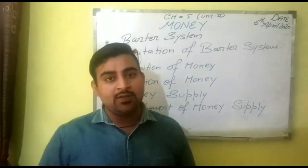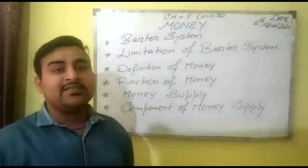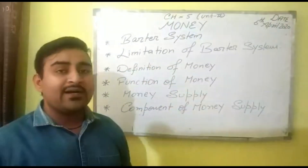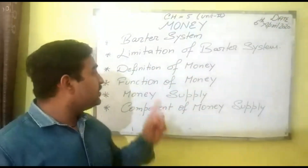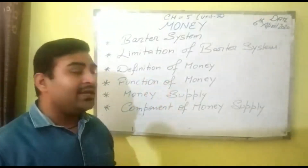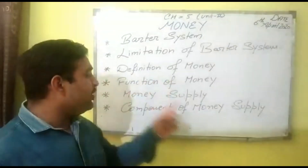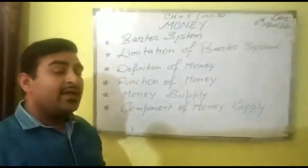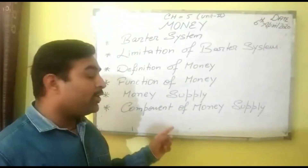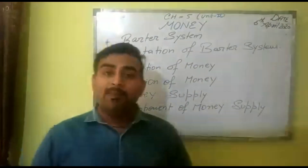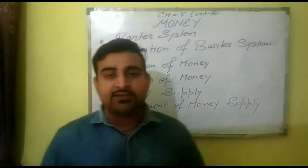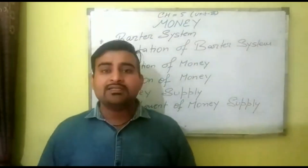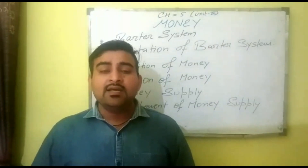In this chapter we will study: first, barter system; second, limitations of barter system; third, definition of money; fourth, functions of money; fifth, money supply; and sixth, components of money supply. Now, about barter system — it is also known as CC economy.